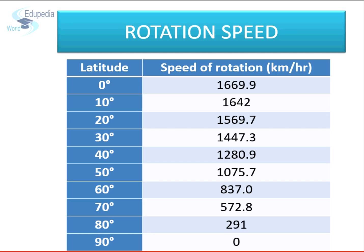Look at the speed of the earth's rotation at different latitudes. At zero degrees, it is 1,669.9 km per hour. As we move to higher latitudes, the circumference of the earth reduces, and so does the speed of rotation. As we reach close to 60 degrees, the speed becomes half of what it is at the equator. And at 90 degrees, the speed of rotation is zero.